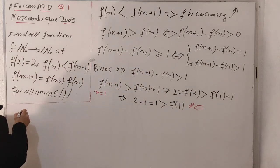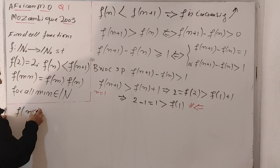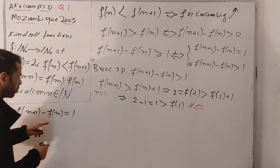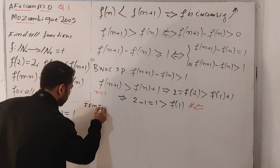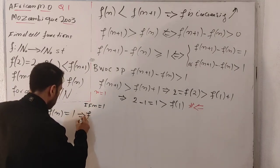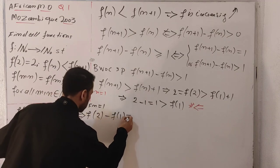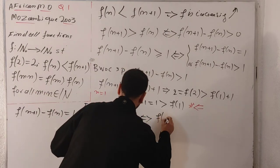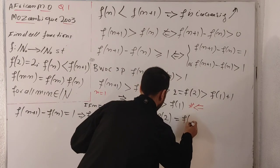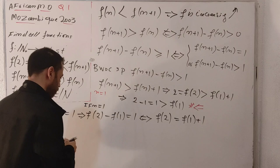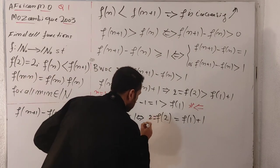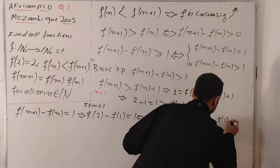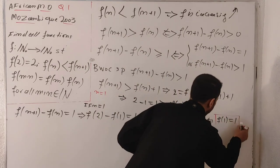That means we must have f(n+1) − f(n) = 1 for all n. Setting n = 1 gives f(2) − f(1) = 1. Since f(2) = 2, we get f(1) = 1. So our first value is f(1) = 1.